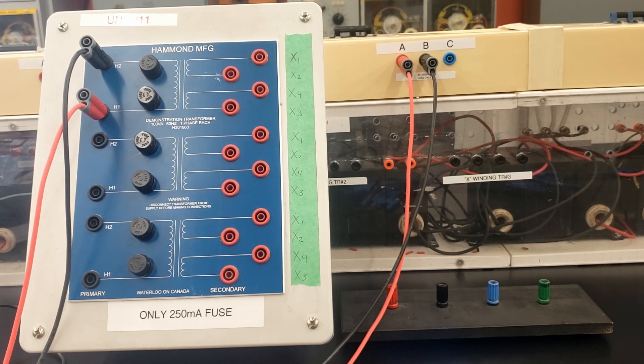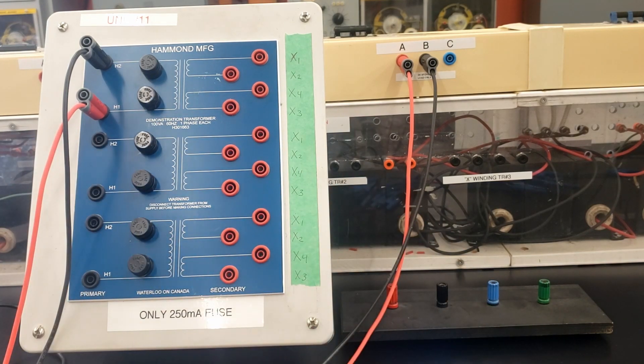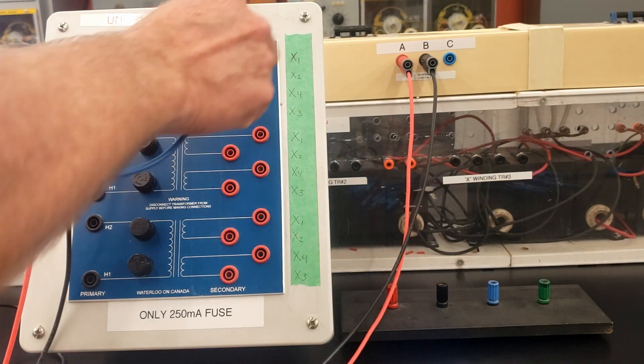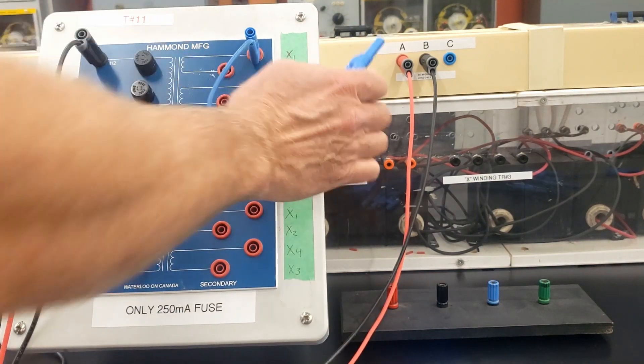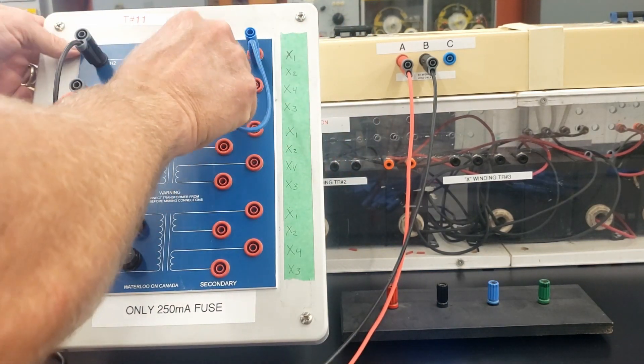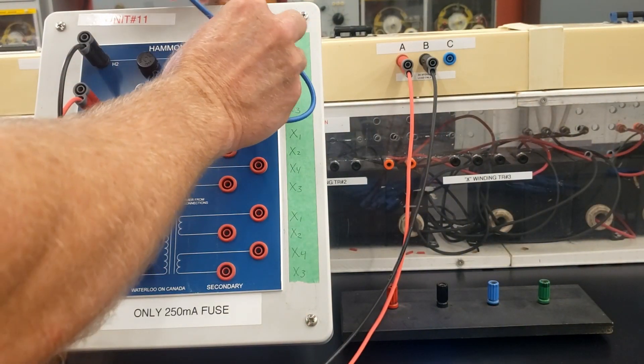We're doing the lower voltage connection. So, I'm going to parallel my secondary. That means that I'm going to connect up X1 and X3. And I'm also going to parallel X2 and X4.